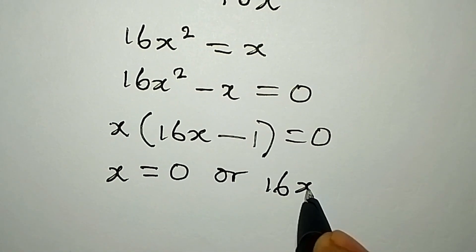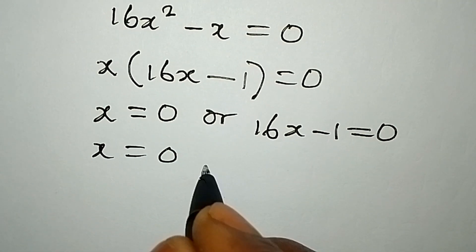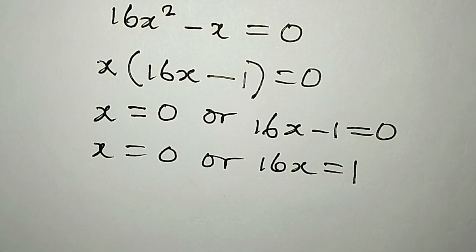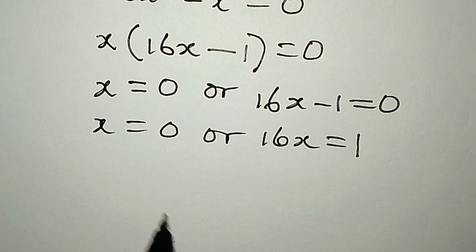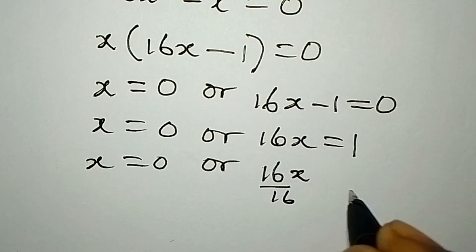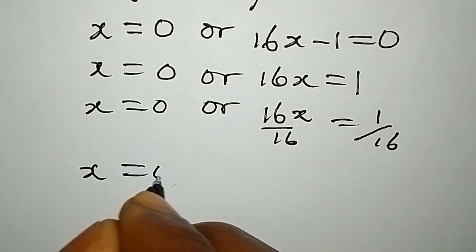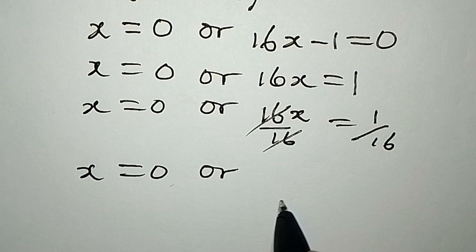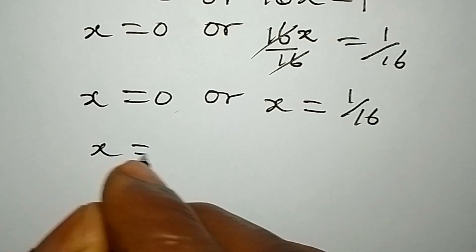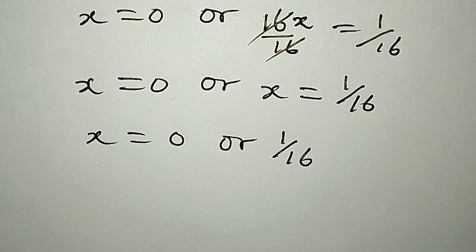x into x will give us 1, and this is equal to zero. So it is either x is equal to zero, or 16x minus 1 is equal to zero. From the second factor, 16x equals 1, so dividing both sides by 16, x equals 1 over 16.